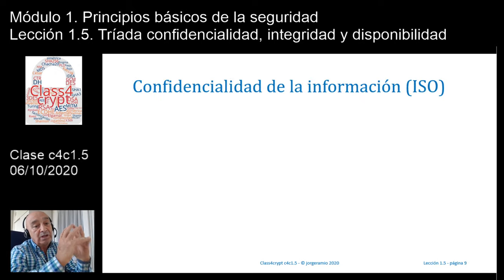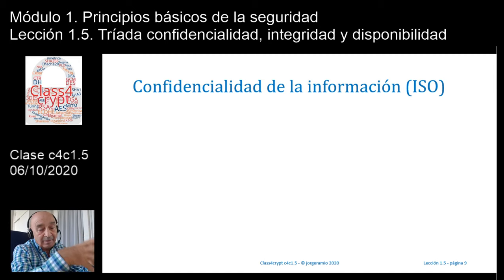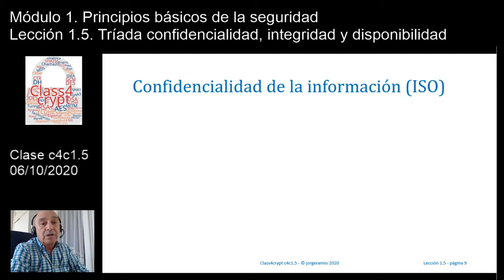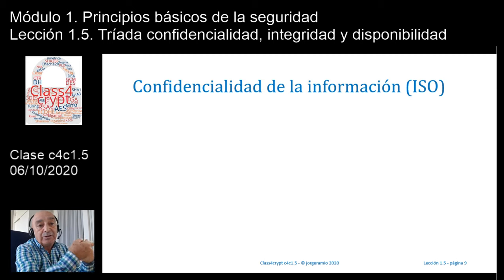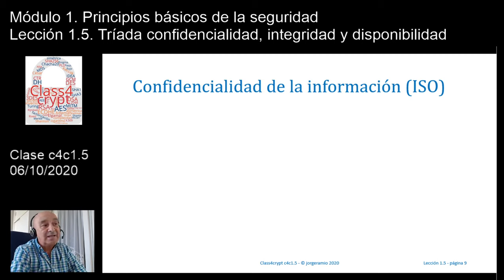Vayamos entonces a dar una definición de estos tres principios básicos de la seguridad: la confidencialidad, la integridad y la disponibilidad. Ya veremos que va a aparecer siempre, no solamente en la parte tecnológica, sino también en la parte de gestión. Para ello, nada mejor que ir a la ISO, donde están las normativas, la 27001, la 27002, etcétera, todo lo relacionado con la seguridad, y vamos a ver las definiciones que me da ese organismo internacional de estandarización.